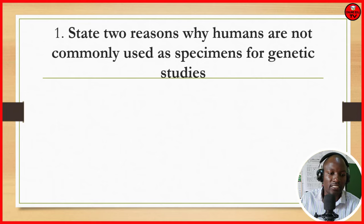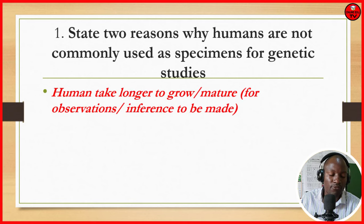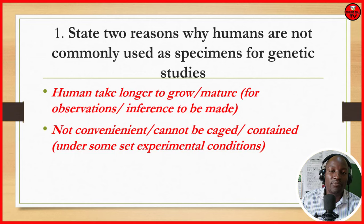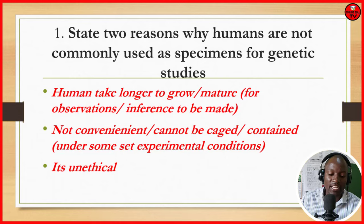Reason number 1 why we may not use human beings as specimens for genetic studies: they take longer to mature and grow, and therefore it may take longer to observe certain characteristics and make conclusions. Number 2, it is not convenient to catch and contain them — it's very difficult to contain a human being. Number 3, which is also very important, it is unethical according to our culture, and may not be accepted in society.